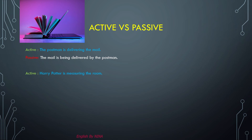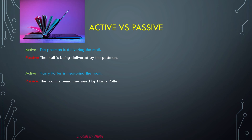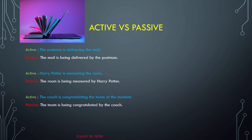Active: 'Harry Potter is measuring the room' — Harry Potter is our subject, 'is' is our to-be verb, and 'measuring' is our verb. The passive form is: 'The room is being measured by Harry Potter' — 'the room' is our object. Active: 'The coach is congratulating the team at the moment.' The passive form is: 'The team is being congratulated' — 'congratulated' is the past participle of 'congratulate.'